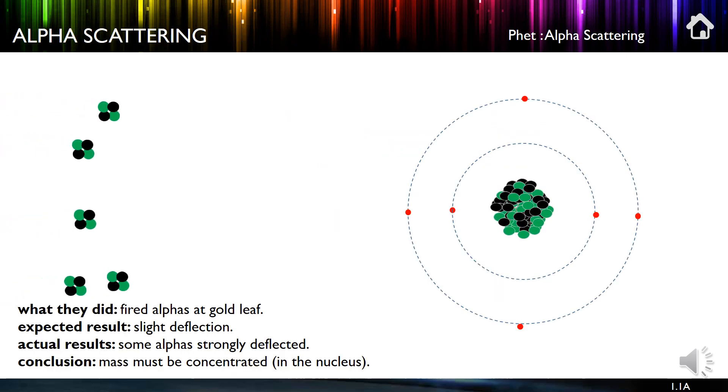So let's look at this key experiment then, alpha scattering. What they did was they fired positive alpha particles—all alpha particles are positive—at gold leaf. Now gold leaf was used because you can make it very thin. And what they discovered was that the majority flew through.